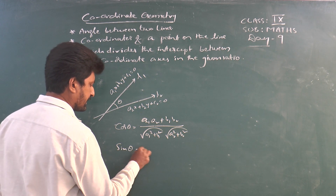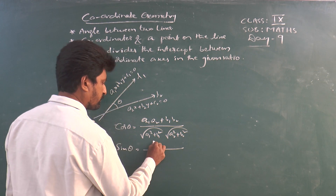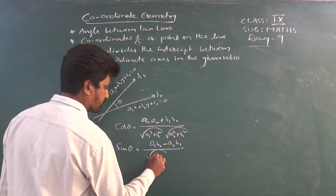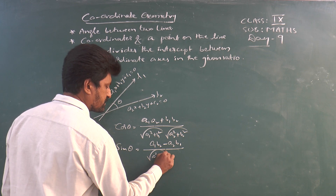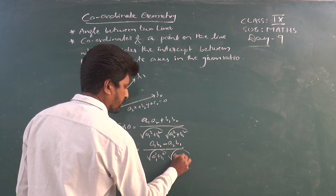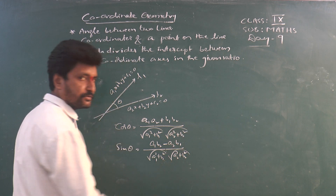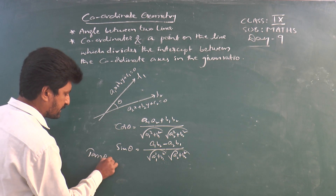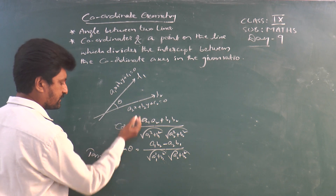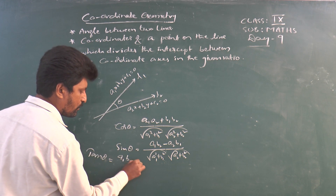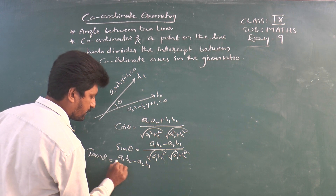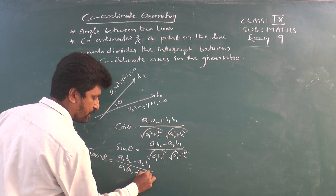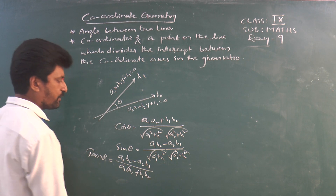For finding sin θ, we use the formula: (a1·b2 − a2·b1) divided by the square root of (a1² + b1²) into the square root of (a2² + b2²). And for finding tan θ — tan θ is simply sin θ divided by cos θ — that means (a1·b2 − a2·b1) divided by (a1·a2 + b1·b2). This is the formula we use.